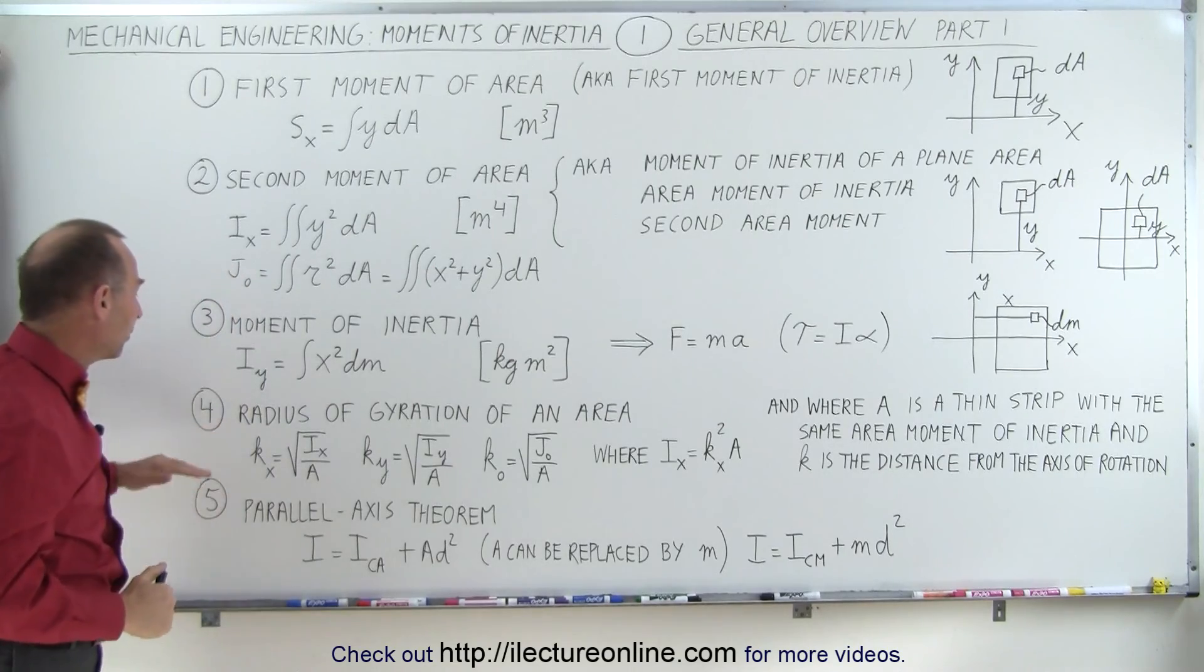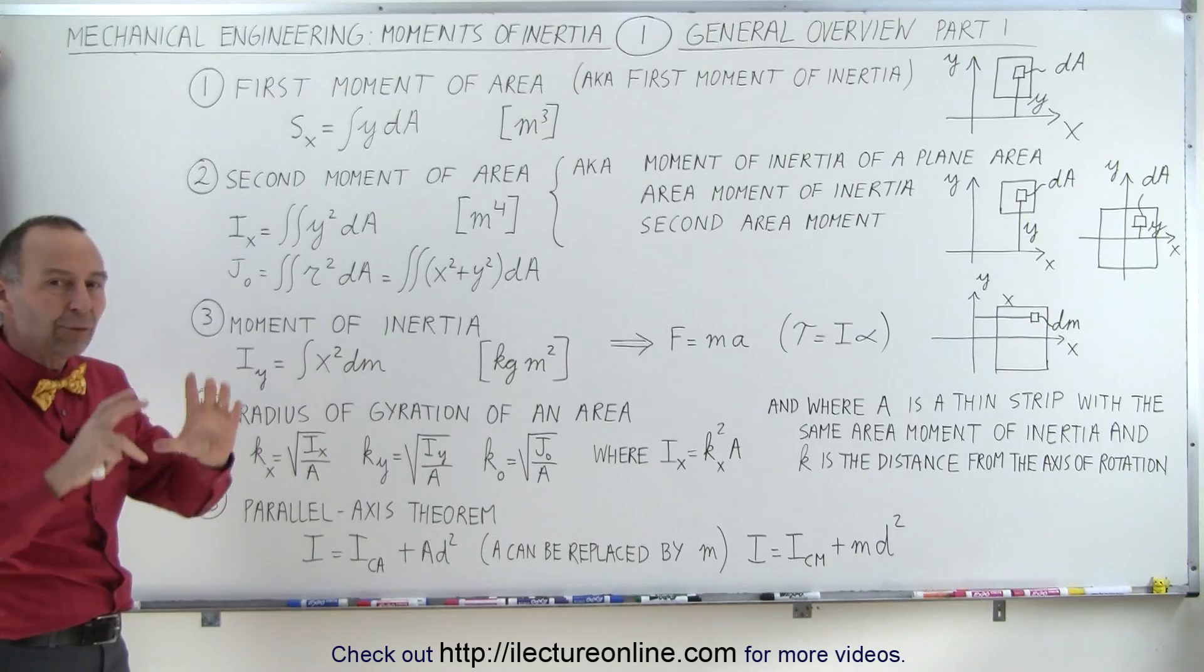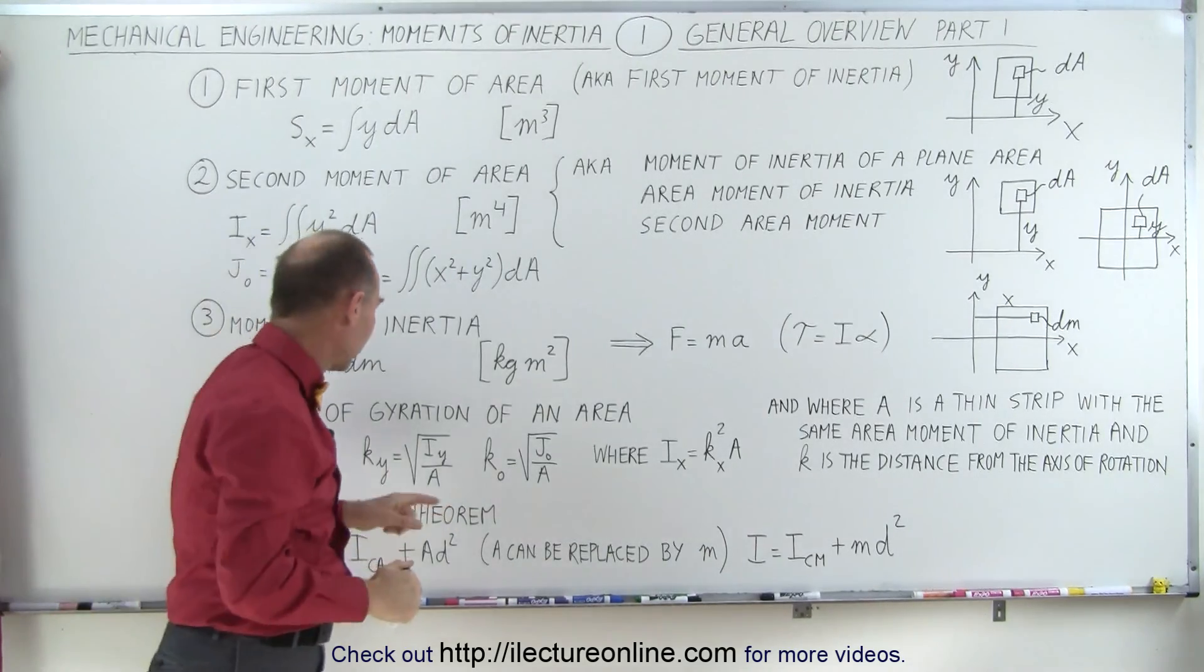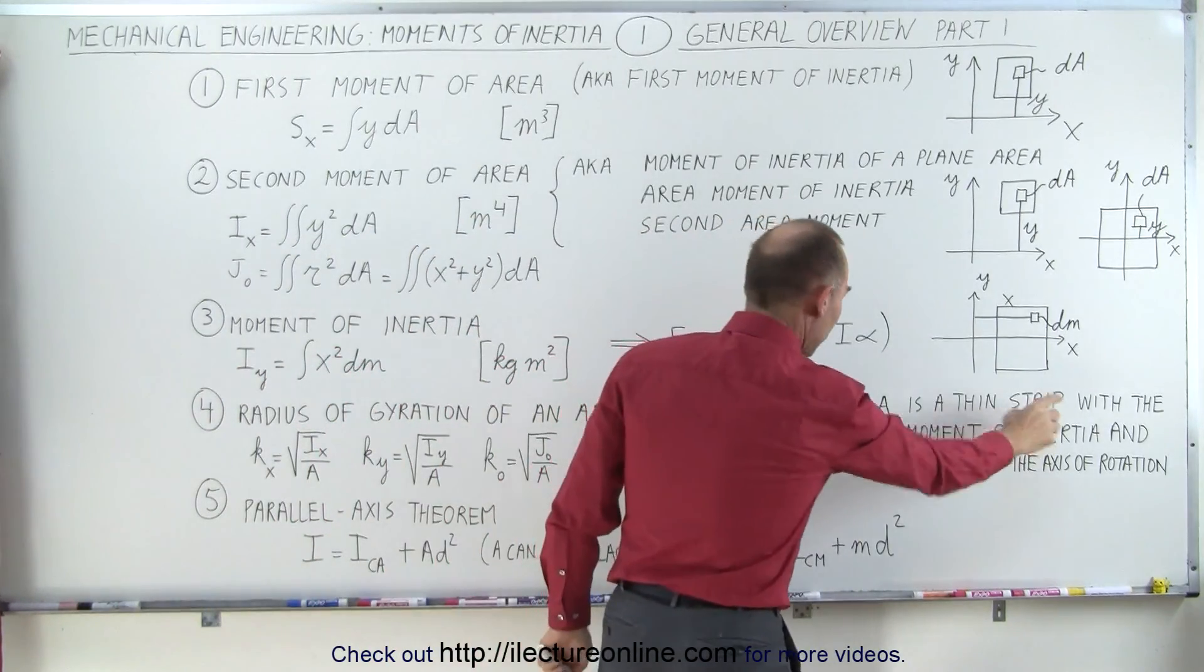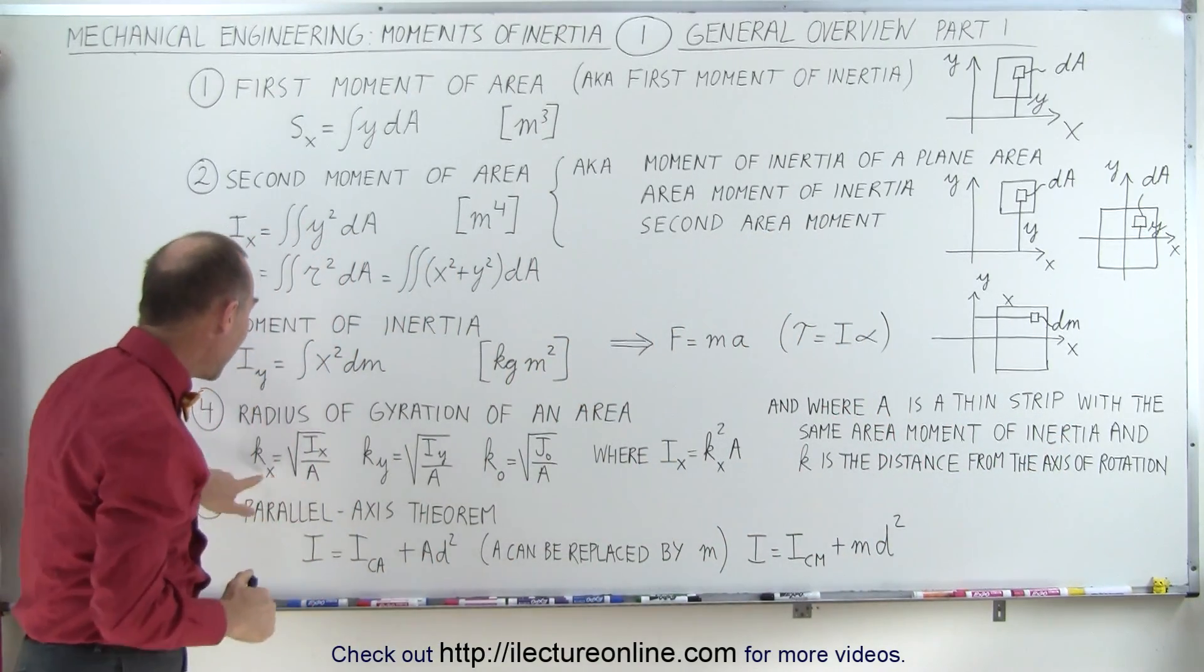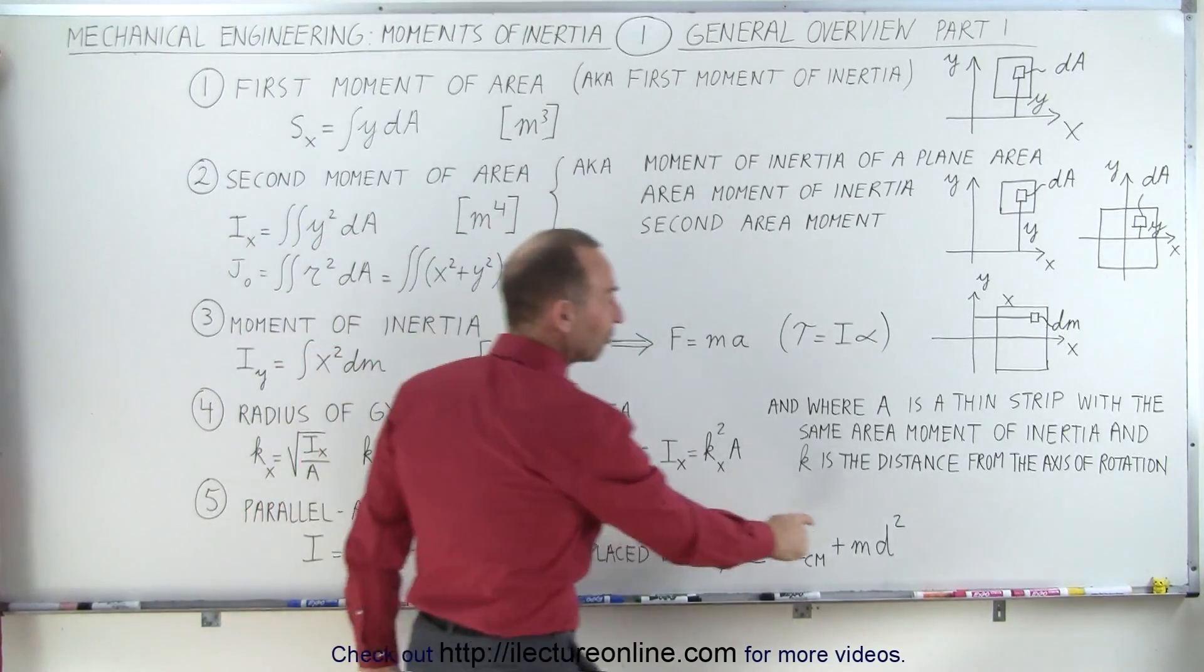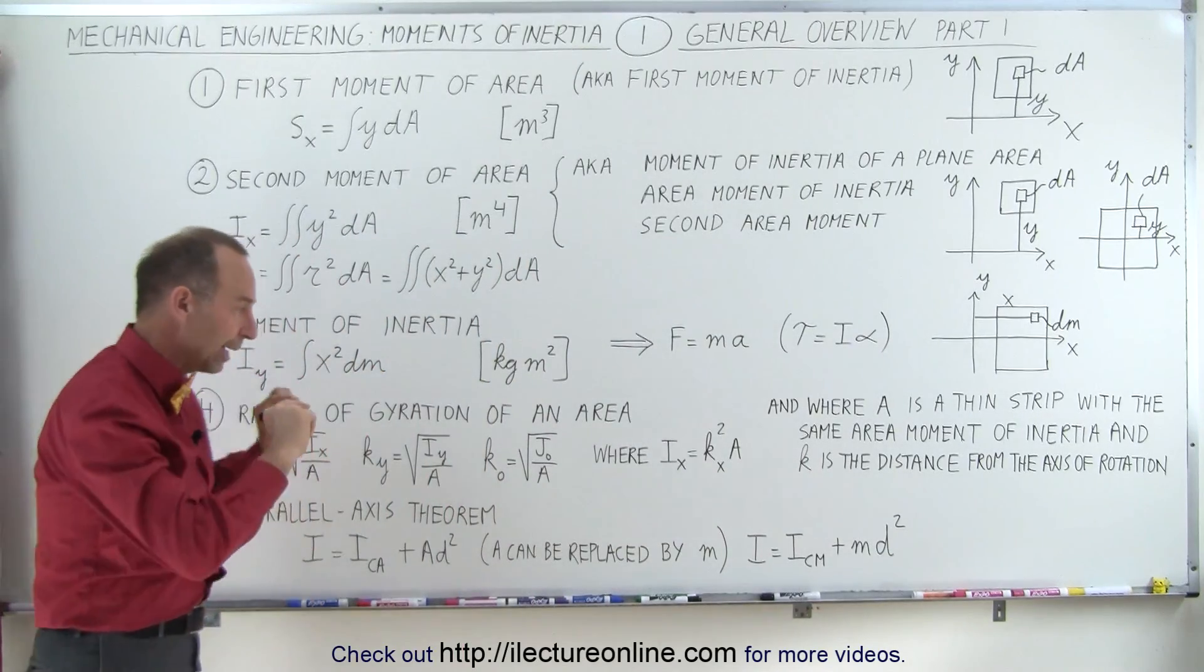The fourth subtopic is called the radius of gyration of an area, which means we take an area and we squish it down into a single strip. We call that strip area A, and A is the thin strip with the same area moment of inertia as the original area. And then k represents the radius of gyration, which is the distance from the axis of rotation to that small strip area element.